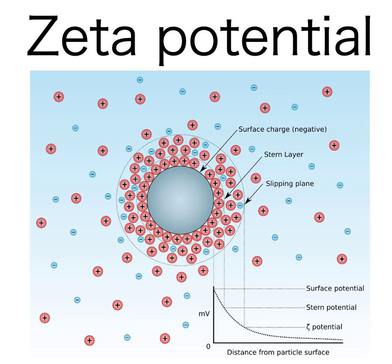Temperature, pH, conductivity, pressure, and streaming potential are all measured in the instrument for this reason. Zeta potential can also be calculated using theoretical models and an experimentally determined electrophoretic mobility or dynamic electrophoretic mobility.